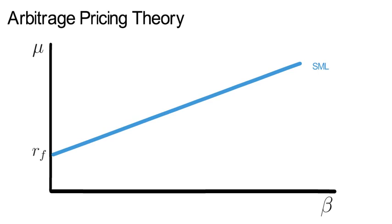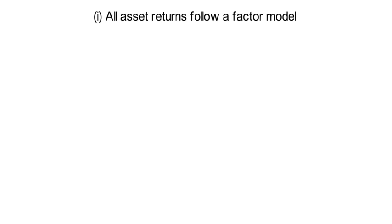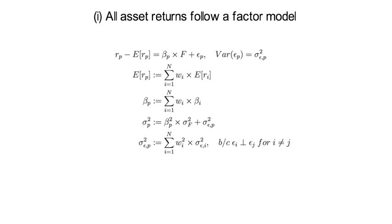Let's discuss the intuition of the APT. In order to keep notation at a minimum, we pretend that the systematic risk factor F is one-dimensional. Assumption 1 of the APT implies that a portfolio made up of N assets follows a linear factor model itself. Equation 1 says that the return of the portfolio minus the expected return equals beta of the portfolio times F plus epsilon P, where the variance of epsilon P is sigma squared epsilon P.